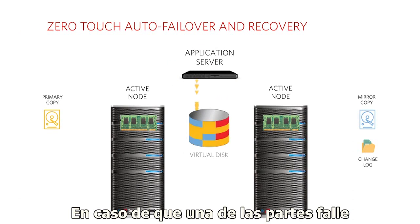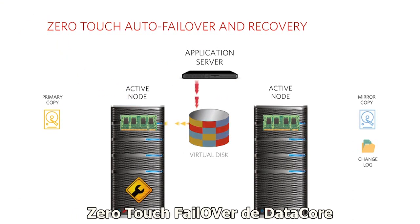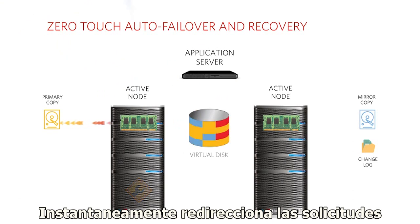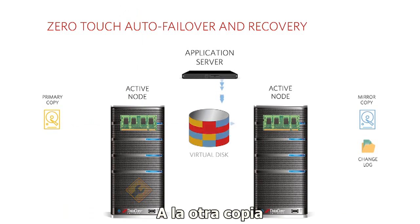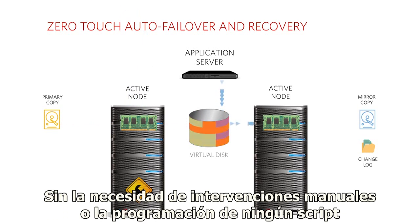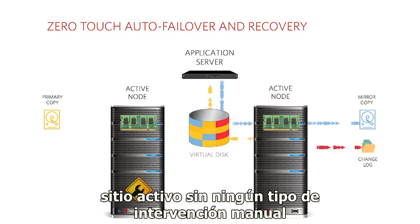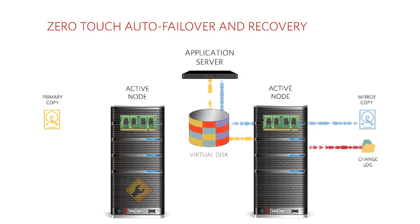In the event that one path or site fails, DataCore's zero-touch failover instantaneously reroutes requests to its mirror copy. No manual intervention or scripting is needed. The system automatically switches over to the second, still active site without requiring any manual intervention.